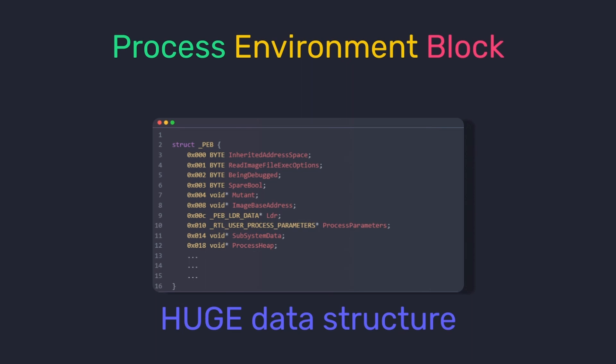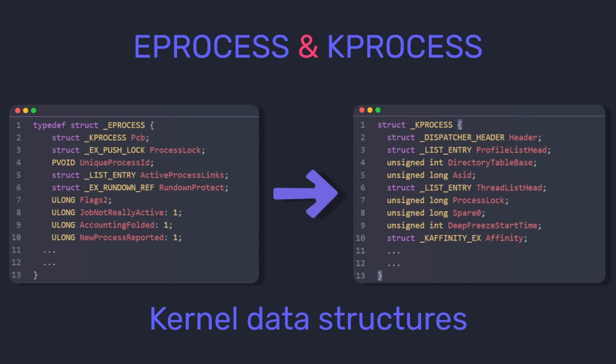If you want to look into the full structure of a PEB, you can check the link in the description. Next up we have two very important data structures: EPROCESS and KPROCESS. Both are stored in the kernel memory of a process. EPROCESS is the kernel representation of a process — the OS uses all the information inside the EPROCESS data structure to manage a process. The KPROCESS data structure is embedded within EPROCESS, and together they contain almost all of the information there is about the process. These data structures are not officially documented by Microsoft.